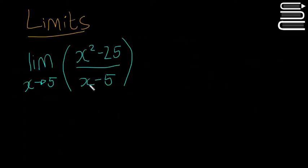We can't just sub 5 straight in. So if you try and sub it straight in and you find 0 over 0 is your answer, which is wrong, then try and factorize it first.